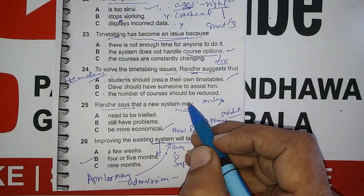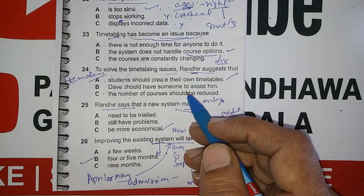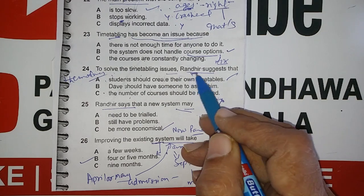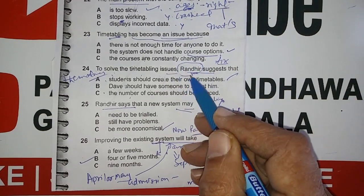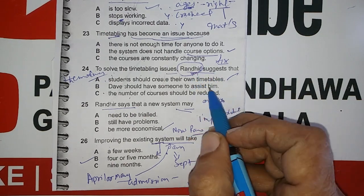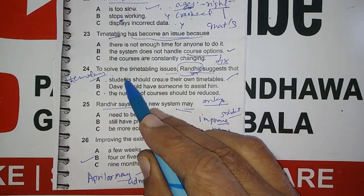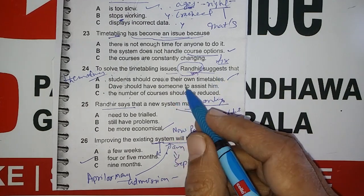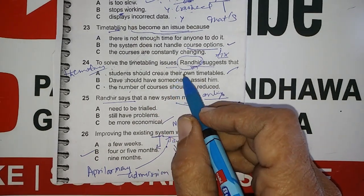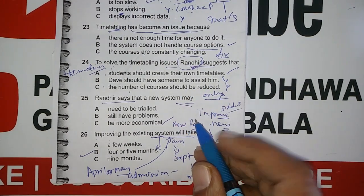I've been given extra responsibilities so I have even less time to do the timetabling. If there was anything you could do, Randy, to make the process more efficient, that would be really helpful. Well, it sounds like you could do with an assistant, but that's obviously not possible. So what about having an online system that students can use to do their scheduling? It may mean less choice for students, but we could create a fixed schedule of all courses and options and they could work it out for themselves.